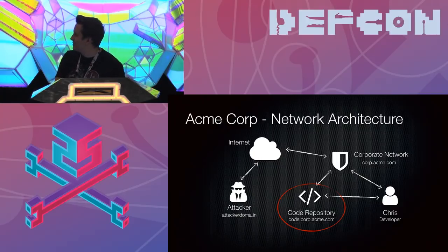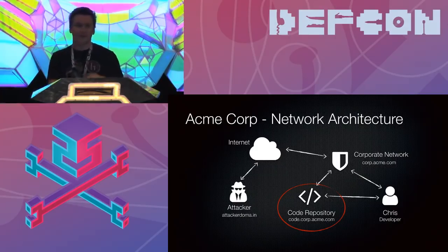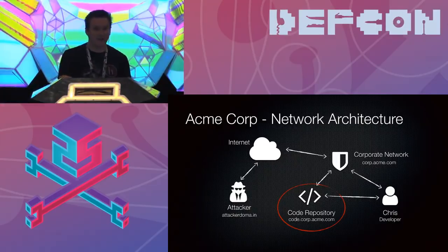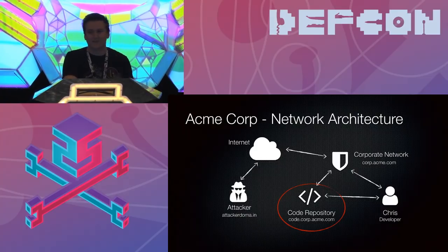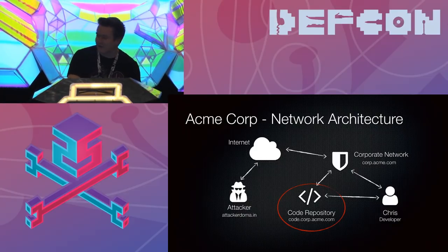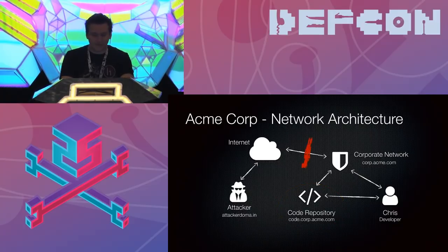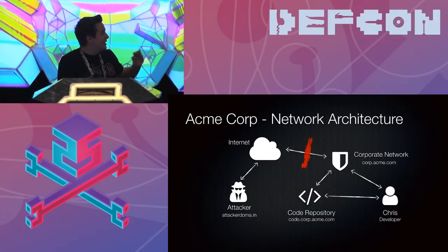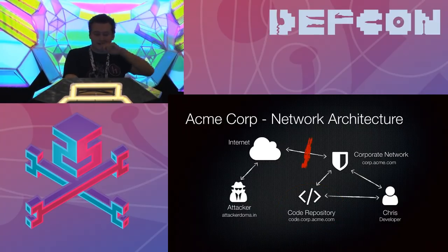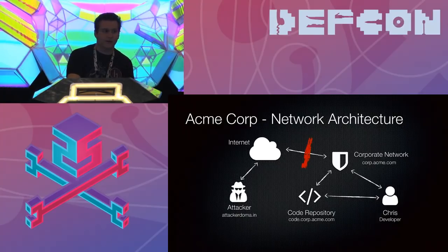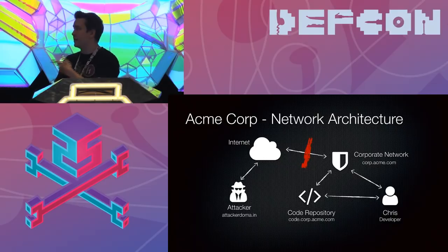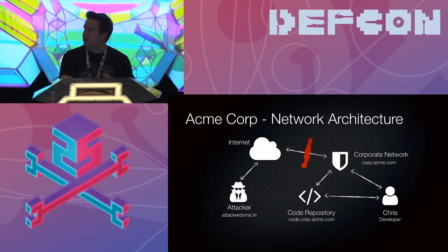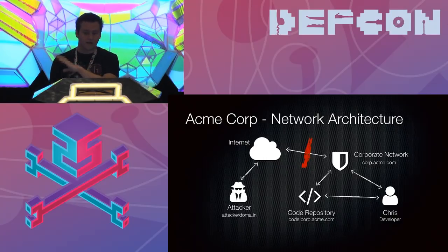I don't think I need to ask people to raise their hand — at least one of those things has probably existed on their network at some point. Everyone spins up something and goes, 'oh, it's fine, it's safe, it's only accessible on the intranet, only our employees can access it.' The edge of our network is going to act as a firewall preventing our bad actor from directly accessing code.corp.acme.com — the only way to access it is being on the internal network.